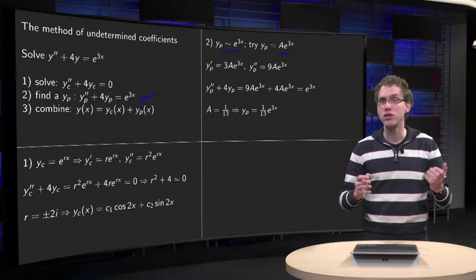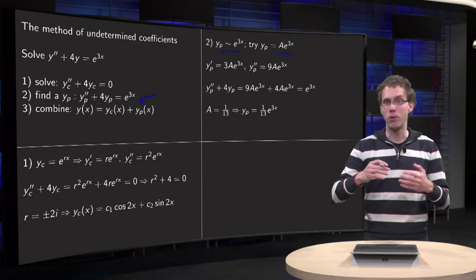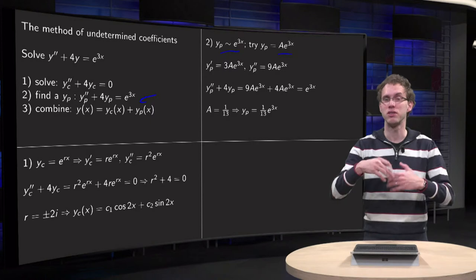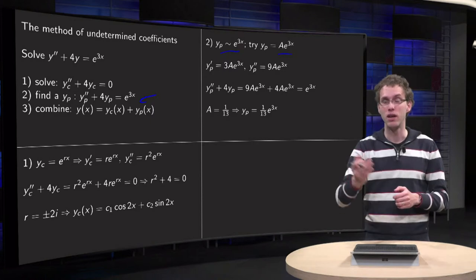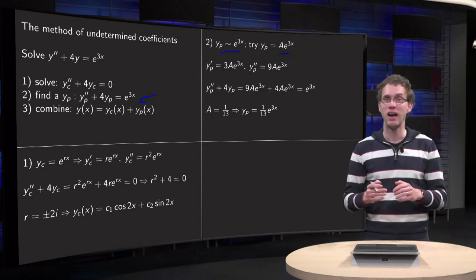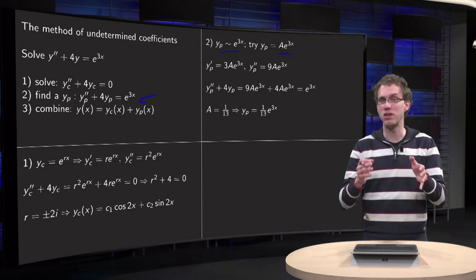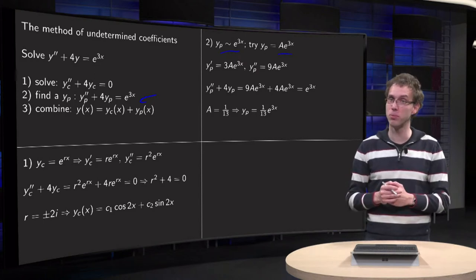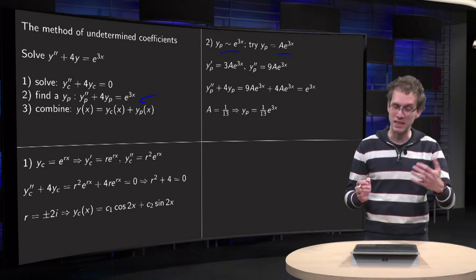Where this A in this case is some undetermined coefficient. We know or we guess that the solution behaves sort of like the right side. It behaves like e^(3x), and this we express by using the undetermined coefficient A, hence the name of the method.